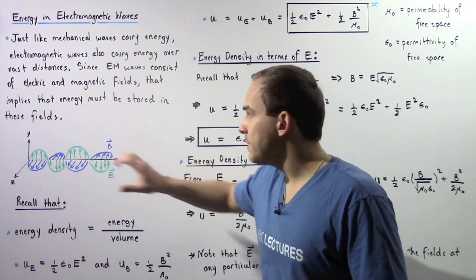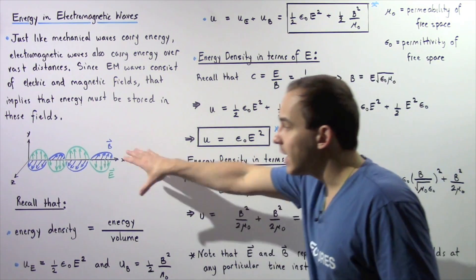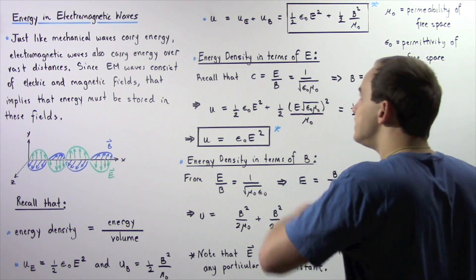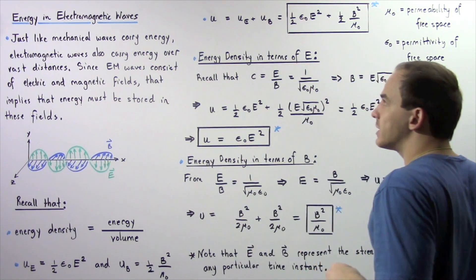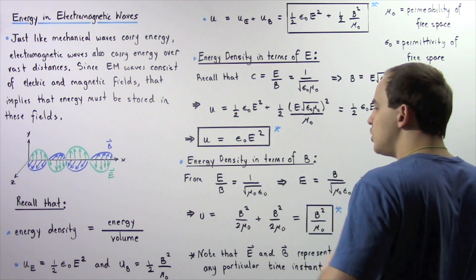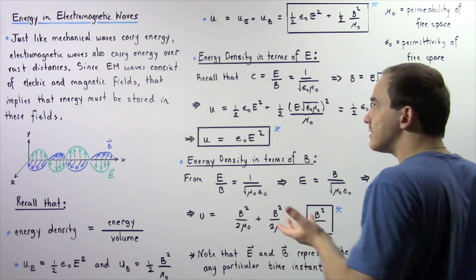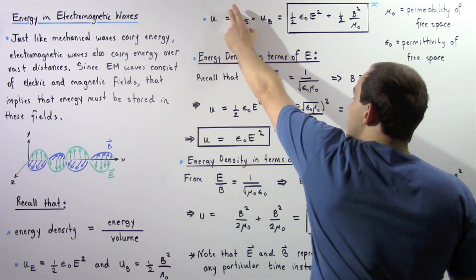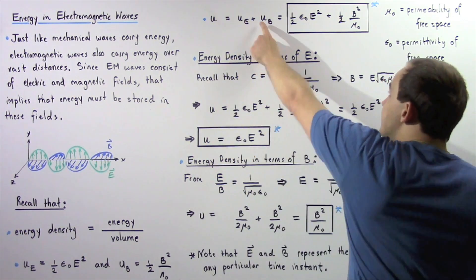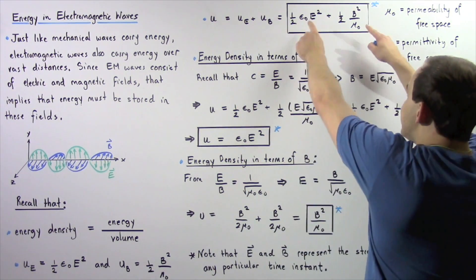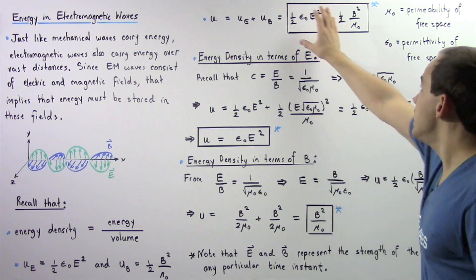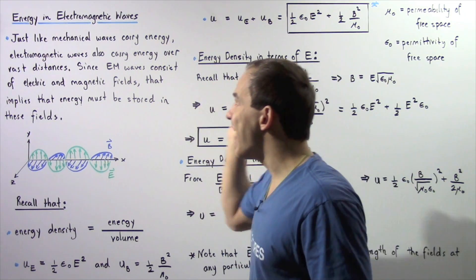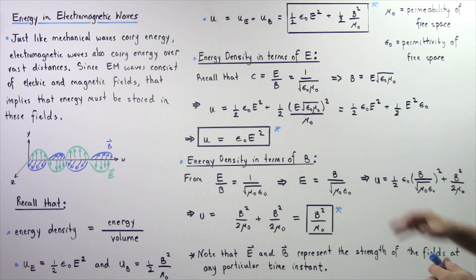Because electromagnetic waves consist of both electric fields and magnetic fields, the total energy density within our electromagnetic wave, given by lowercase u, is equal to the sum of the energy density of the electric field and the energy density of the magnetic field. Substituting the expressions for uE and uB gives us the equation for the total energy density stored inside our propagating electromagnetic wave.